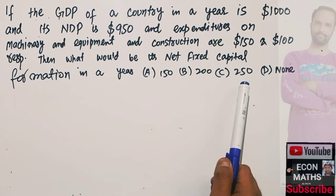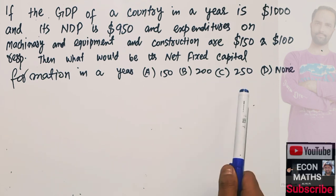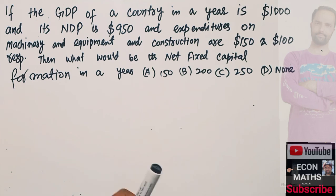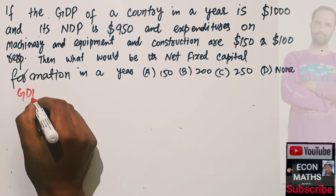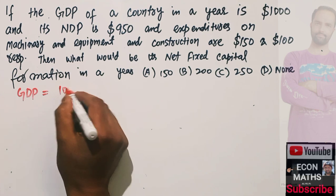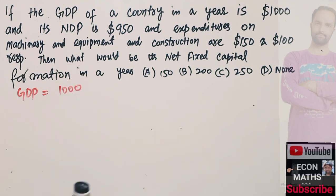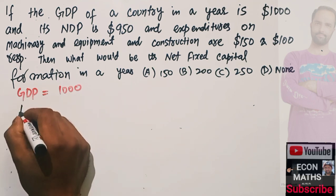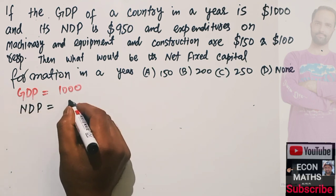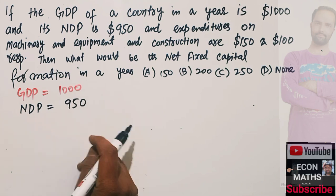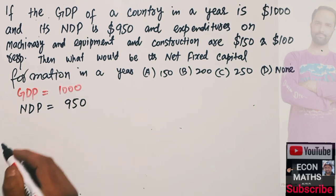The options are $150, $250, and $200, and none of them. We need to find out the correct option. We are given that GDP is equal to $1000 and net domestic product is $950.